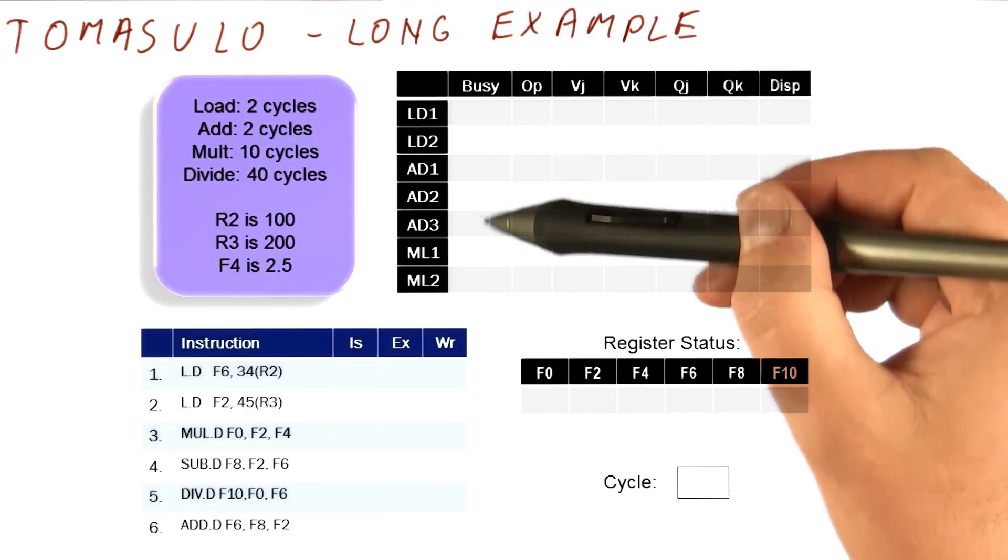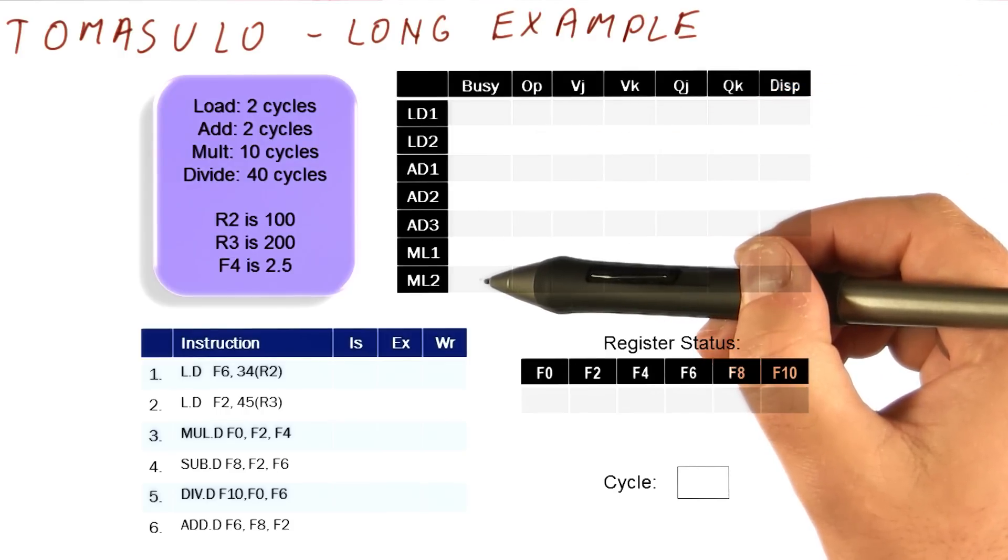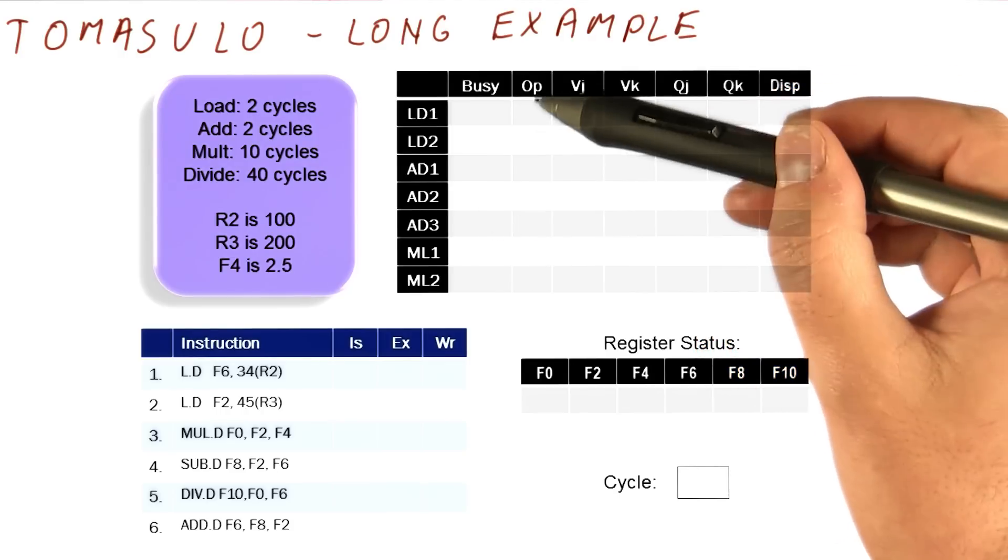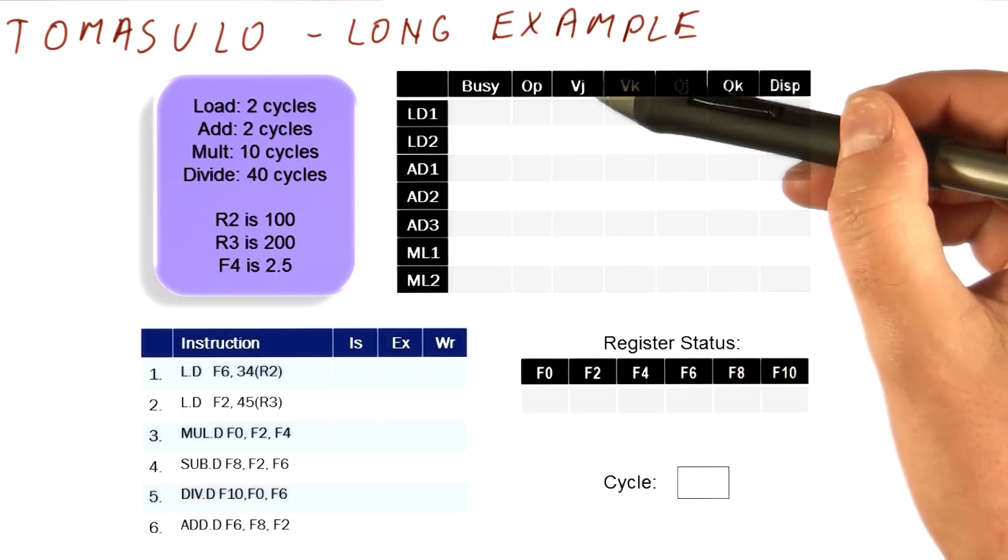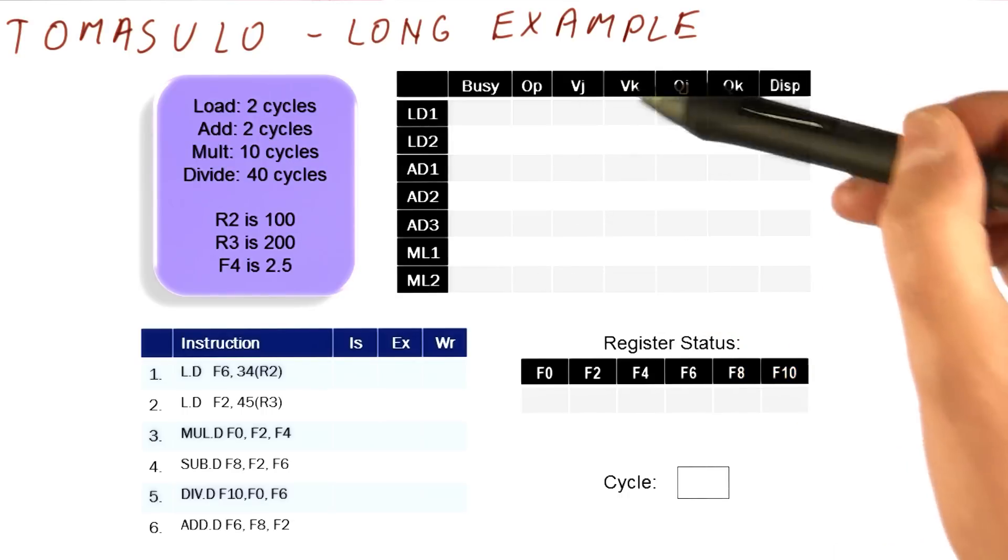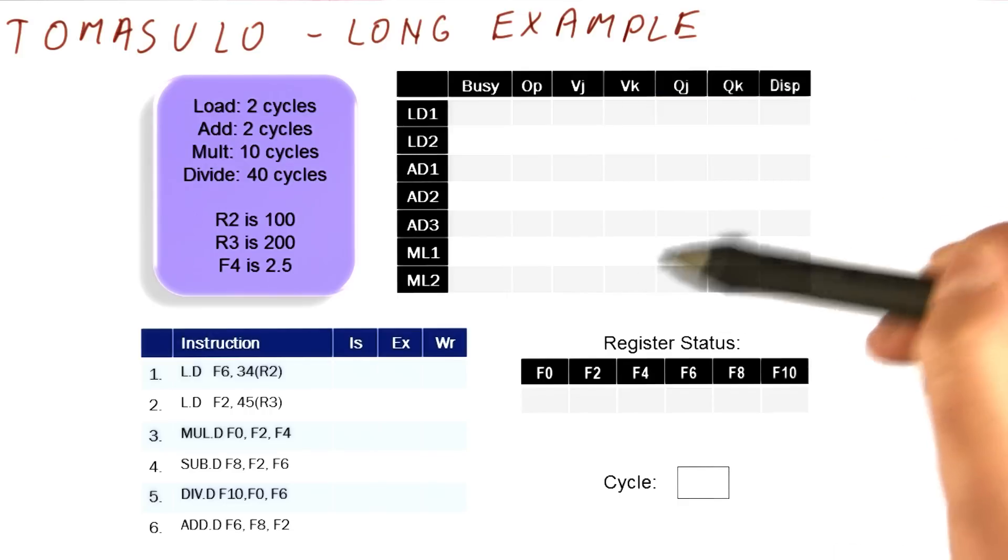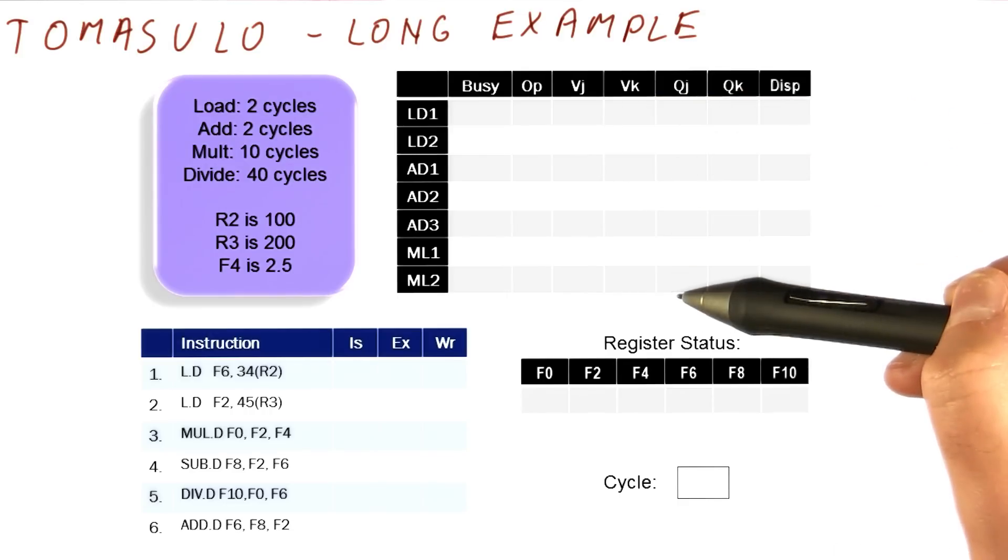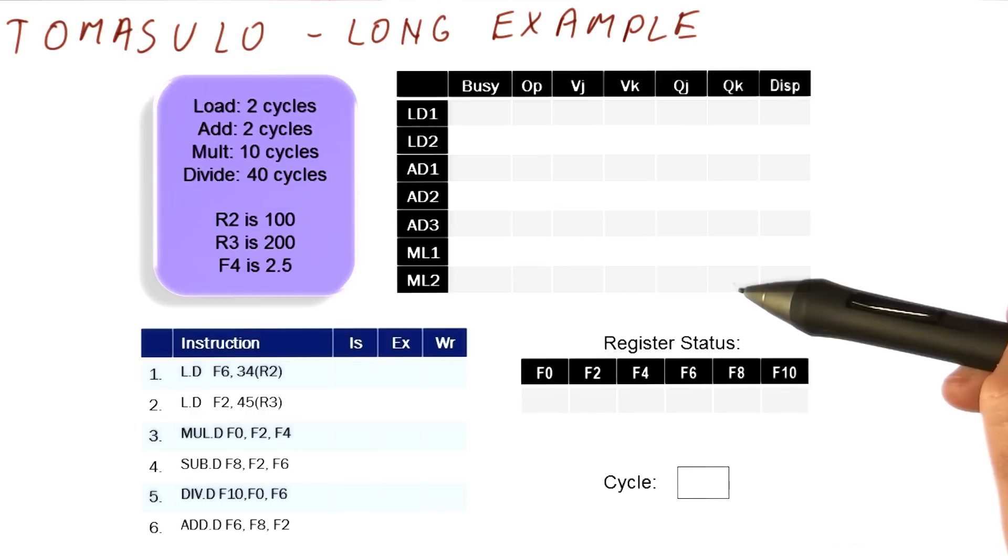Here we will just check when the instruction is in a reservation station. This is going to be what the operation is. This is where we will store the value that we have for this operand. This is the value for the second operand. This is what we are waiting for in the first operand. This is what we are waiting for for the second operand. And this is whether the instruction has been dispatched so that we can keep track of it.